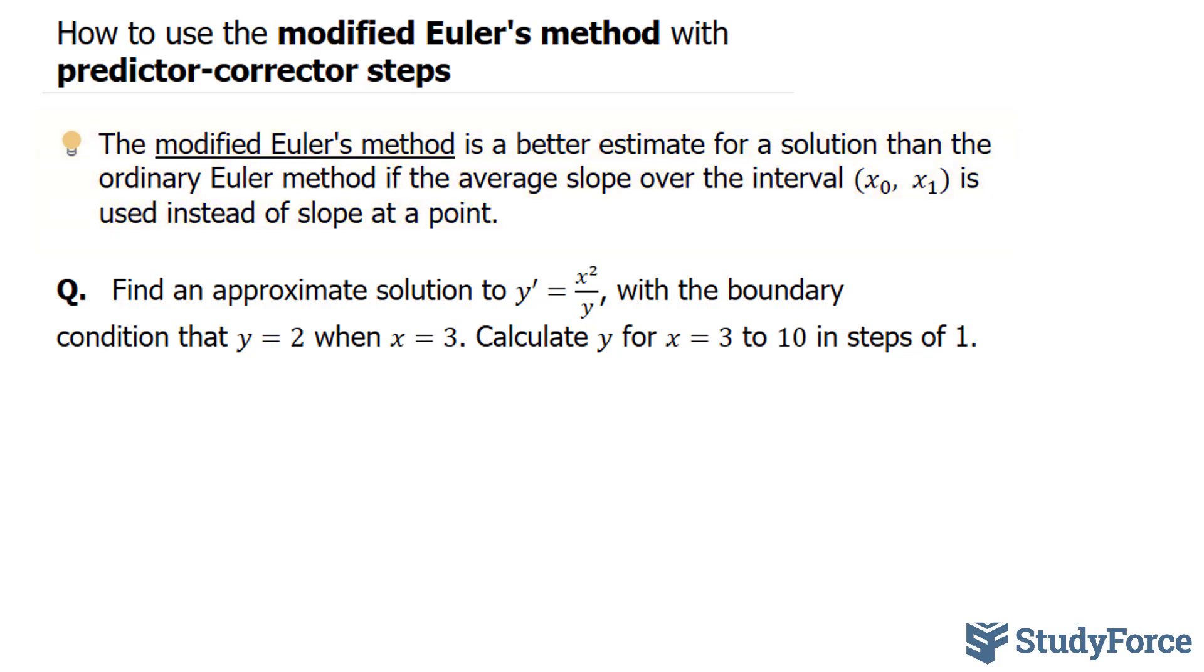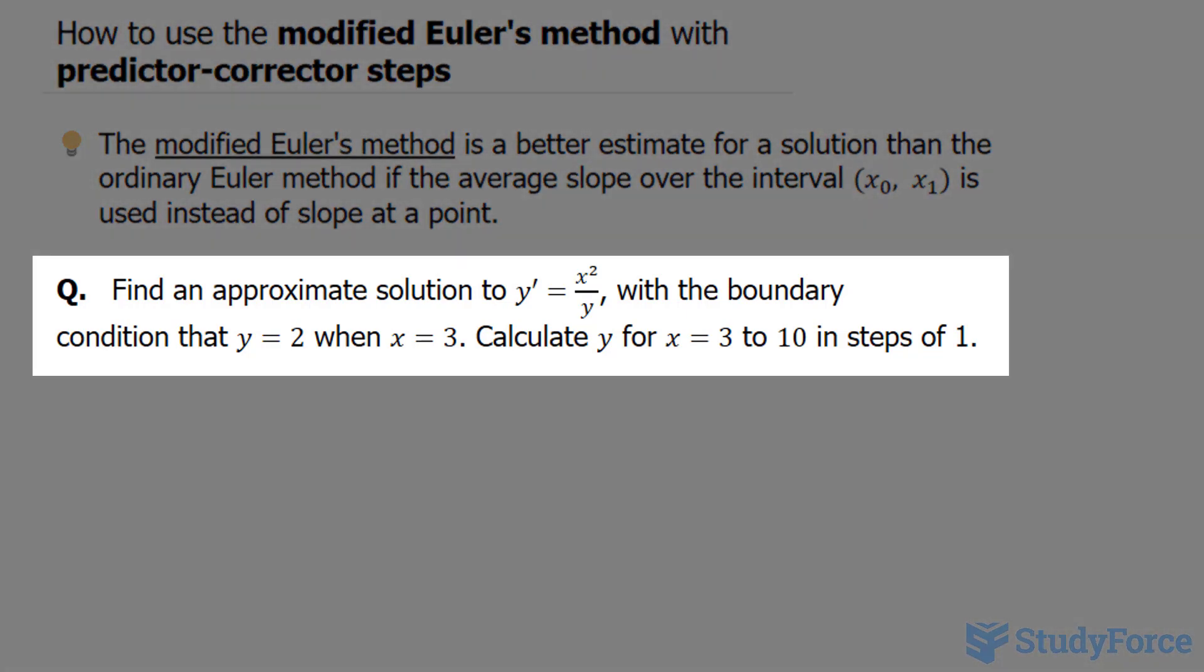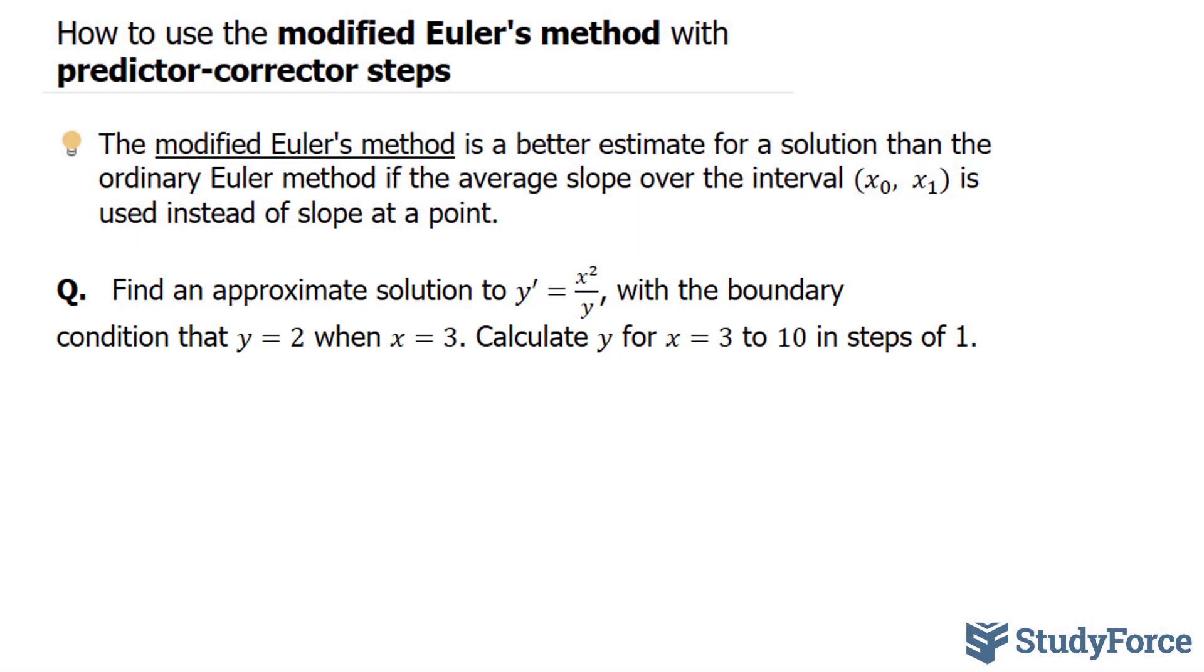We've already done a video where we use Euler's method to this exact same example, except this time I'll show you how to use the modified Euler's method to get a better solution. The question reads: find an approximate solution to y' = x²/y with the boundary condition that y = 2 when x = 3. Calculate y for x = 3 to x = 10 in steps of 1.